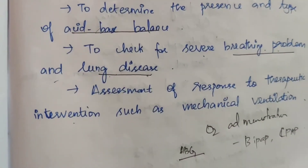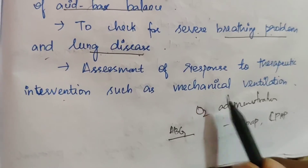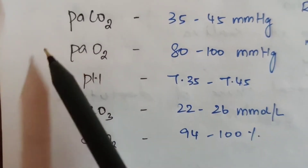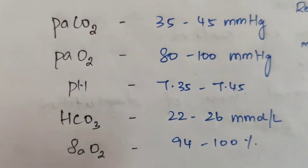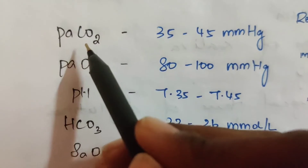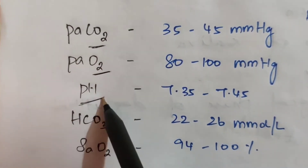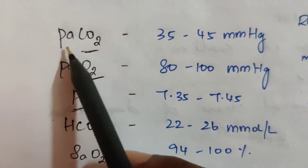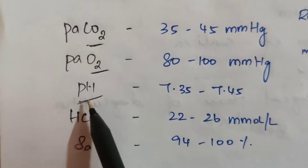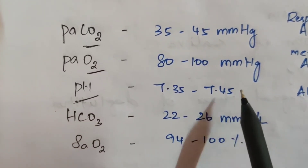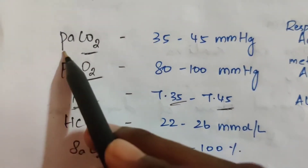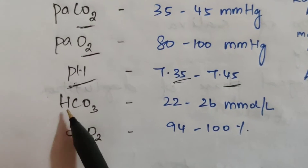That is to make sure that you can provide any type of ventilation and the next treatment to be carried out. Common values: PaCO2 — partial pressure of carbon dioxide — normal value is 35 to 45 mmHg. PaO2 — partial pressure of oxygen — normal value is 80 to 100 mmHg. pH normal value is 7.35 to 7.45. Next, HCO3 — that is bicarbonate.